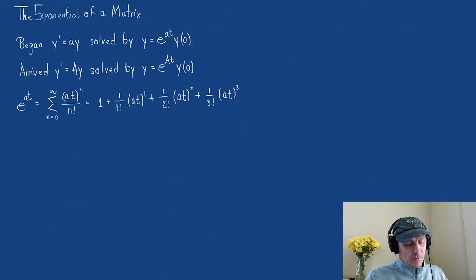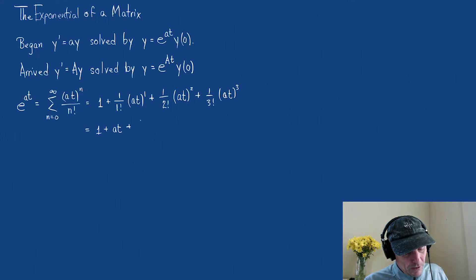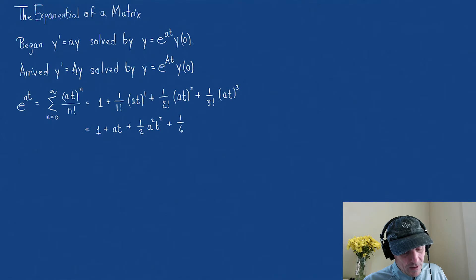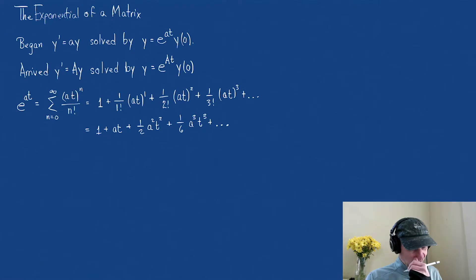Let me clean this up a bit. We might more naturally write it as 1 plus a t plus one-half a squared t squared, plus one-sixth a cubed t cubed, plus dot dot dot — and that continues on forever. That is e to the a t.